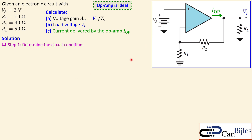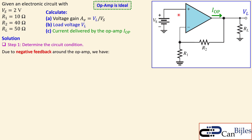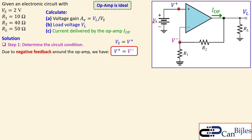Let's determine the condition of the circuit. We know the op-amp has two terminals which are made equal to each other due to negative feedback. So due to negative feedback, node V-minus and node V-plus will be equal to each other. If you had a positive feedback instead, there is no guarantee that V-minus equals V-plus.